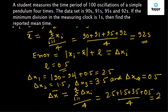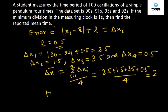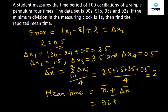So finally, the reported mean time will be x-bar that is the mean of the sample data plus minus delta x-bar that is the mean of the error. So finally, it comes out to be 92 plus minus 2 seconds. So this is our reported mean time.